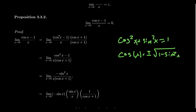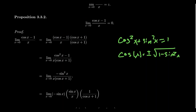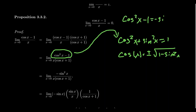You'll see what happens when you FOIL this out. Cosine times cosine is cosine squared. In all the other cases, you get cosine times 1 and negative 1 times cosine, which cancel each other out. So the numerator becomes cosine squared minus 1. The denominator — we don't multiply out denominators, we leave them alone — so we leave it factored as x times cosine of x plus 1. Using the Pythagorean relationship, cosine squared x minus 1 equals negative sine squared of x, which gives us the statement we see down here.